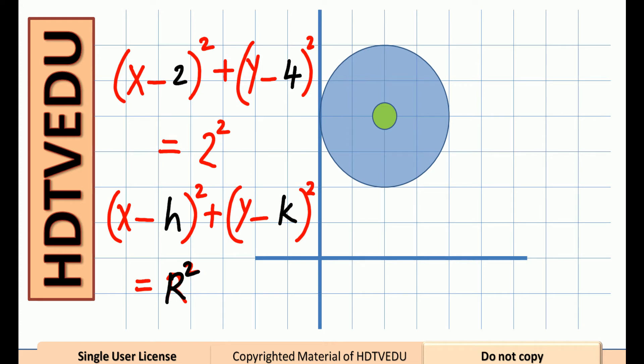we see that h is equal to 2, k is equal to 4.